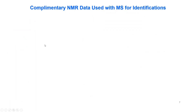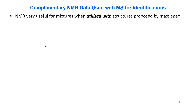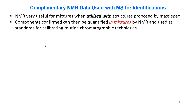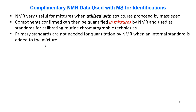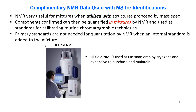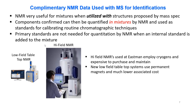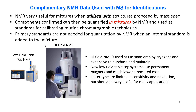Complementary NMR data is used with mass spec for identifications very often at Eastman. NMR is very useful for mixtures when utilized with structures proposed by the mass spec. Components confirmed can then be quantitated in the mixture by NMR and used as a standard for calibrating other routine chromatographic techniques. Primary standards are not needed for quantitation by NMR when an internal standard is added. High field NMRs are normally employed at Eastman, but they can be expensive. New low field tabletop systems use permanent magnets and much lower associated costs.